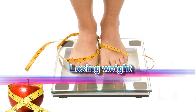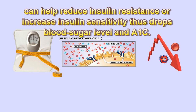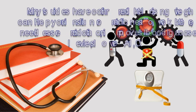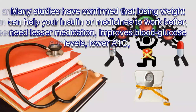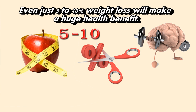Losing weight can help reduce insulin resistance and increase insulin sensitivity, thus dropping blood sugar levels and A1c. Many studies have confirmed that losing weight can help your insulin or medicines work better, reduce the need for medication, improve blood glucose levels, lower A1c, and reduce the risk for diabetes complications, high cholesterol, and hypertension. Even just 5-10% weight loss will make a huge health benefit.